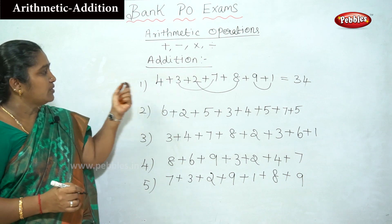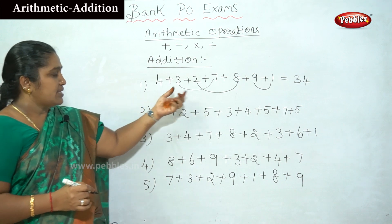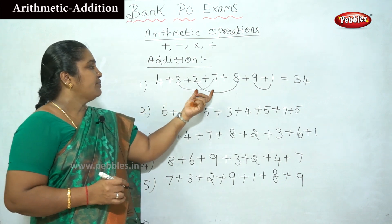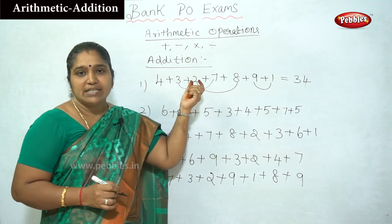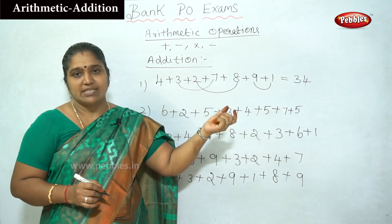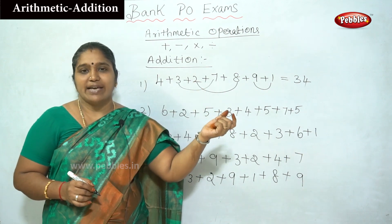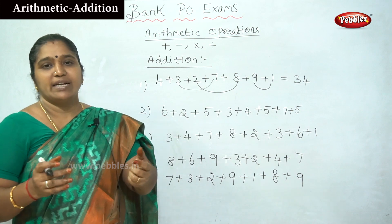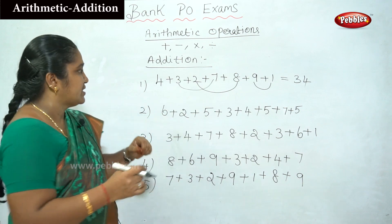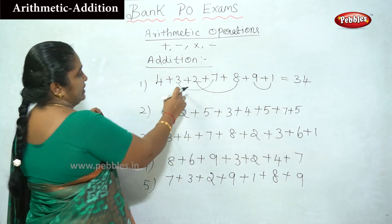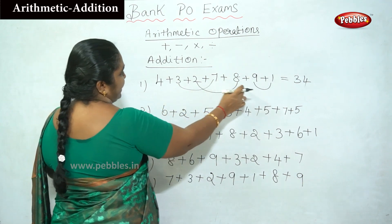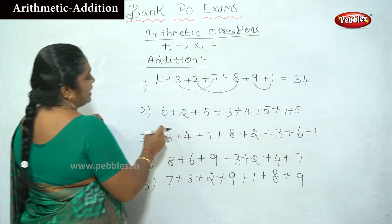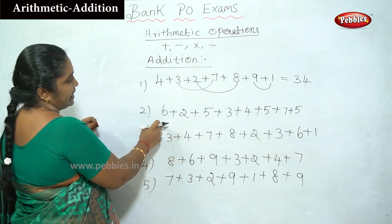We have to look for pairs of digits that add up to 10. If two digits make 10, we combine them. For example: 3 plus 7, 2 plus 8, and 9 plus 1 — like this.